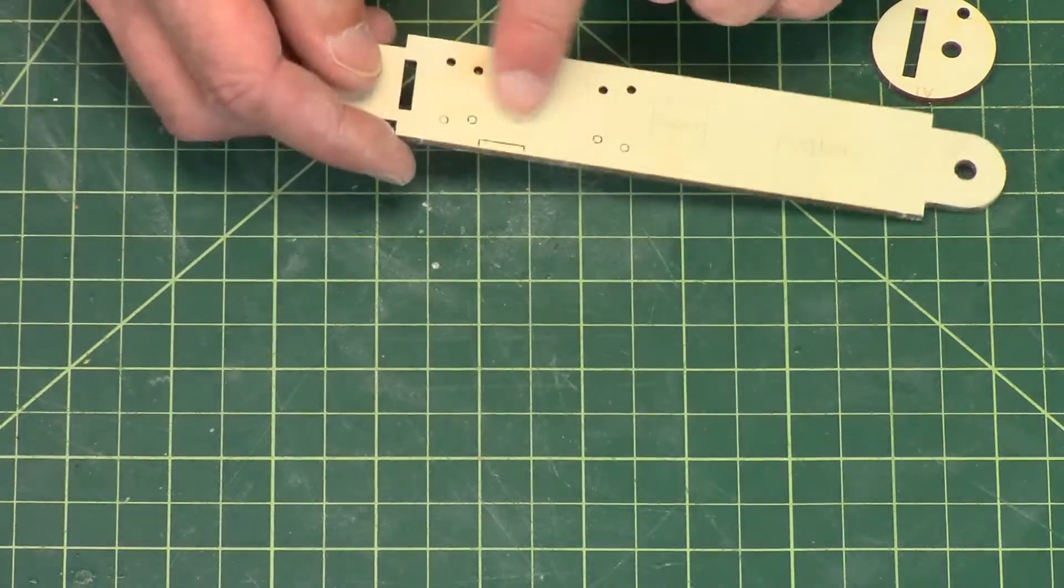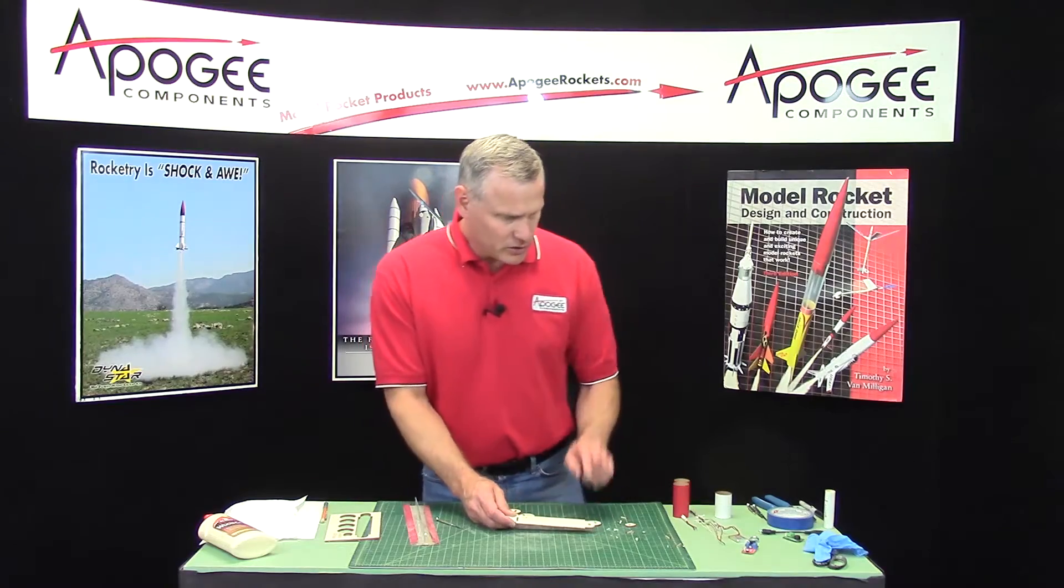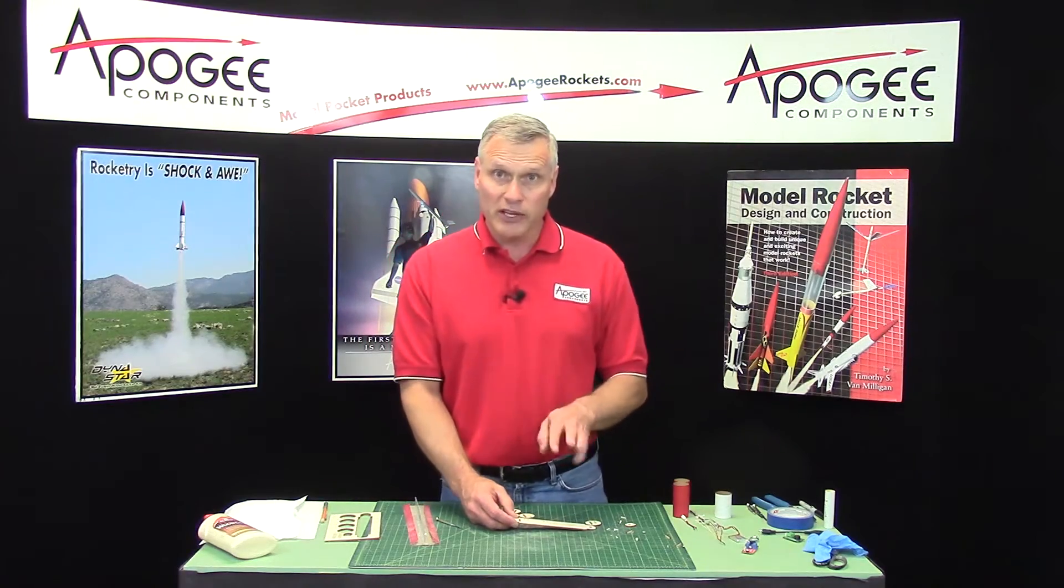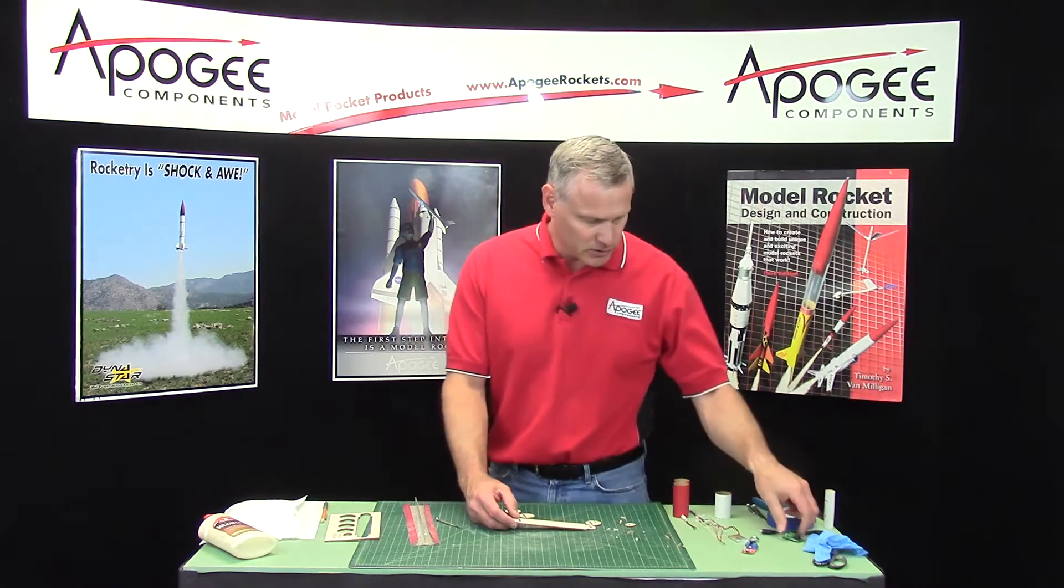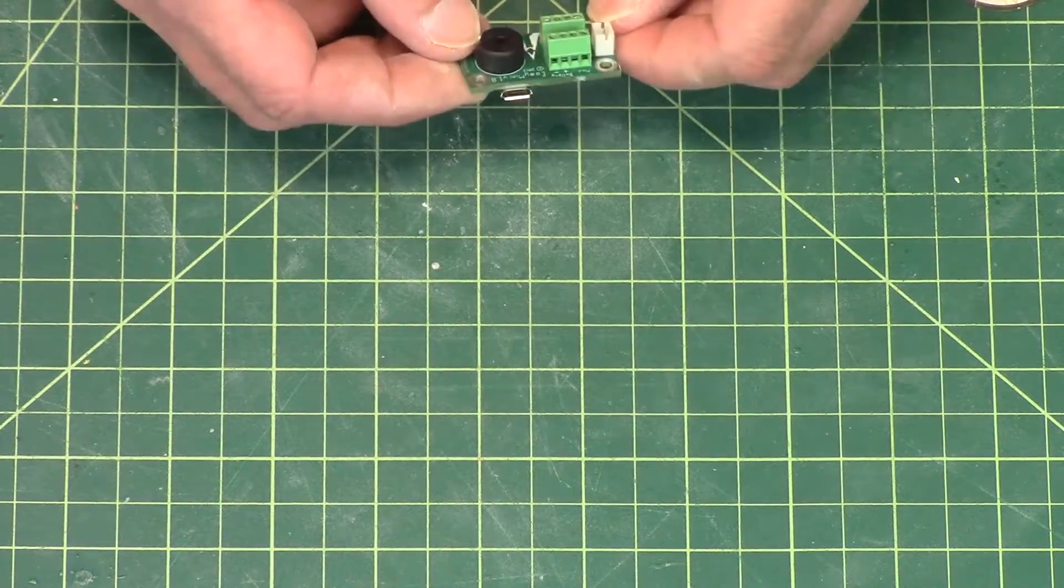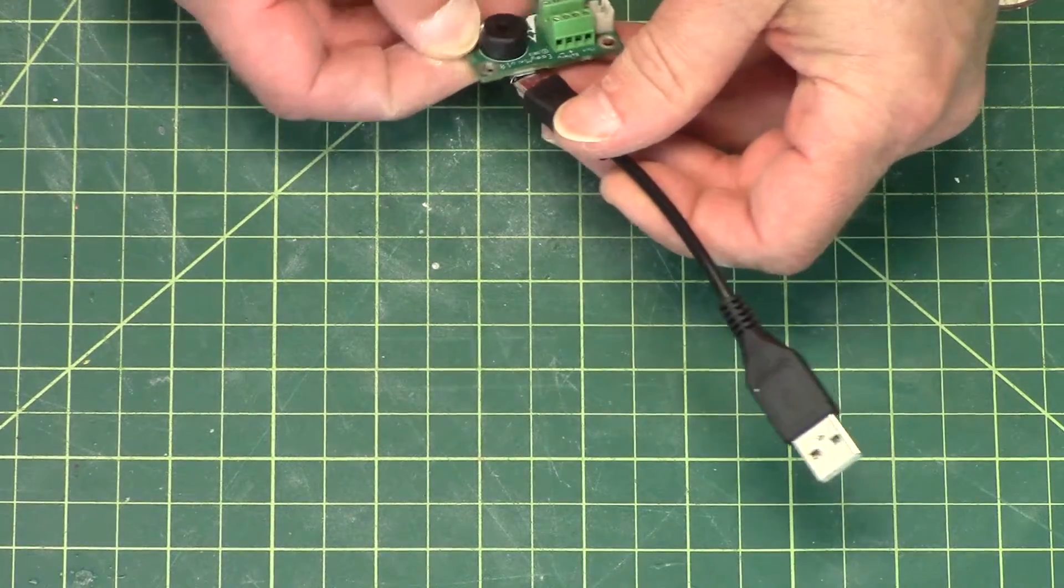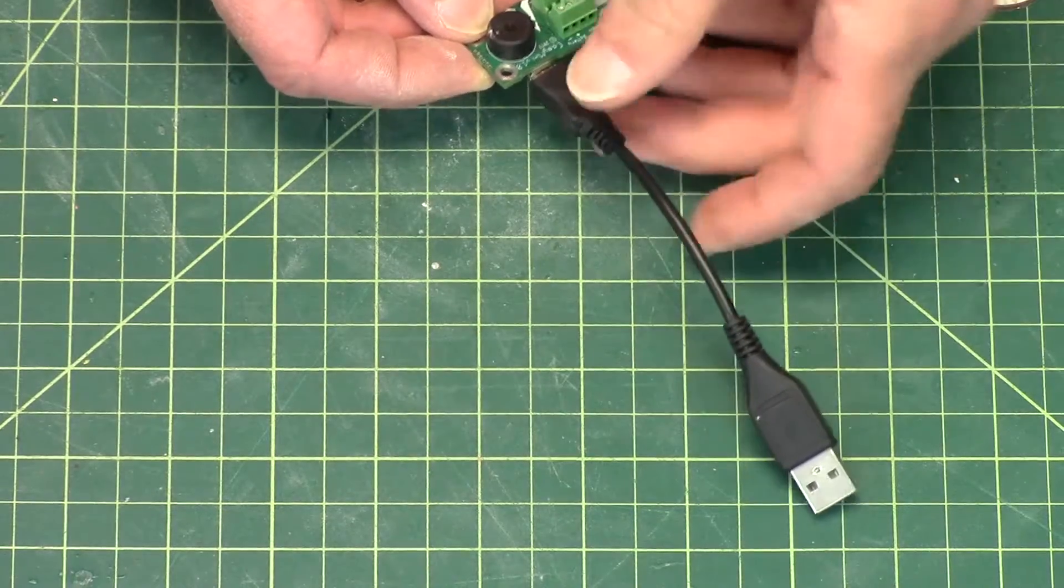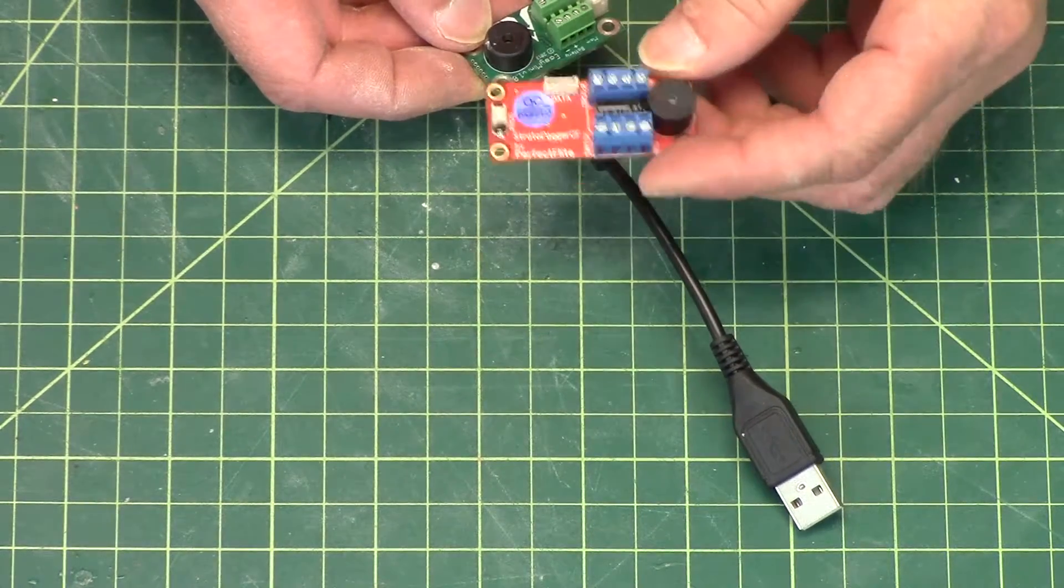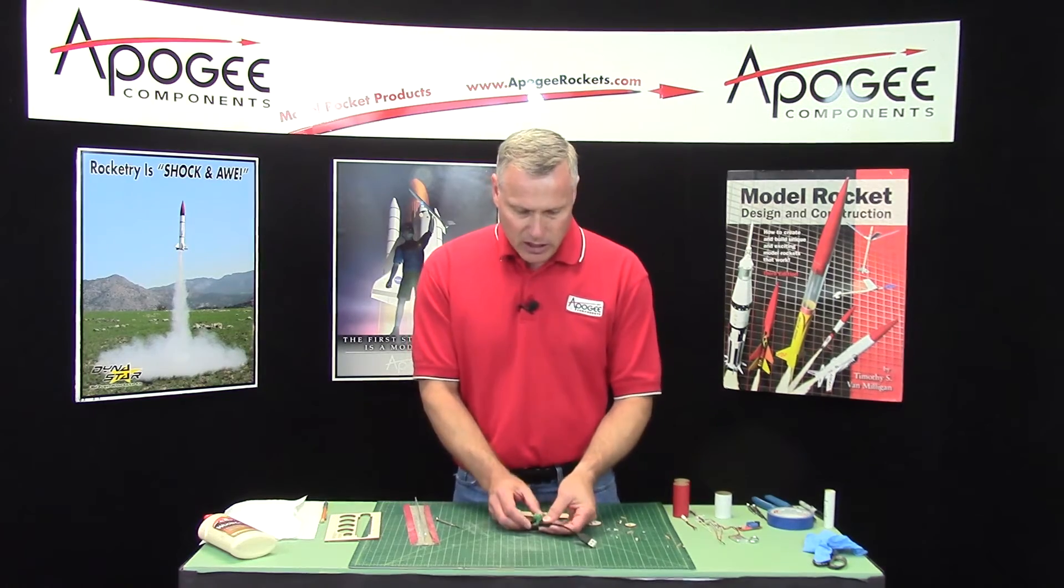Now on the sled, you'll also see this little piece right here. That is specifically for one of the altimeters, the Easy Mini altimeter, which is this one right here. If you look at it, it has a USB port on the side, and that's how you connect it to your computer to change the settings. The straddle logger doesn't have that, so this is only for the Altus Metrum Easy Mini.